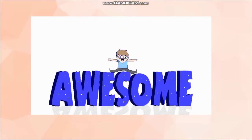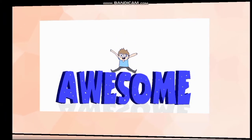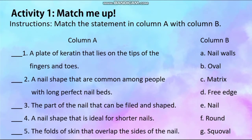Isn't it awesome to learn new things and to know the nail structure and different nail shapes? Now we will test what you have learned by answering these activities. Activity number 1: Match the statement in column A with column B. The choices in column B are: A. Nail walls, B. Oval, C. Matrix, D. Pre-edge, E. Nail, F. Round, and G. Squoval. Write only the letter of the correct answer.